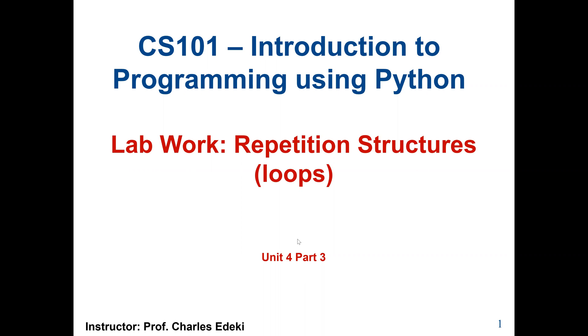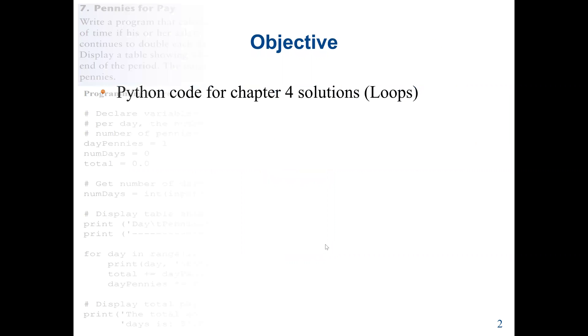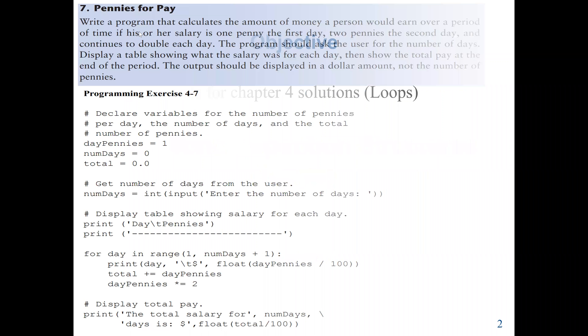Our main objective is to use loops or repetition control structures to solve two problems. Our first problem is to write a program that calculates the amount of money a person will earn over a period of time if their salary is one penny for the first day, two pennies for the second day, and continues to double each day.